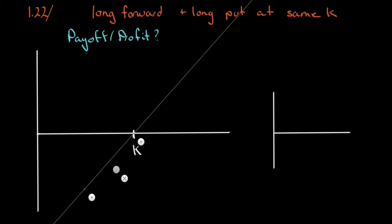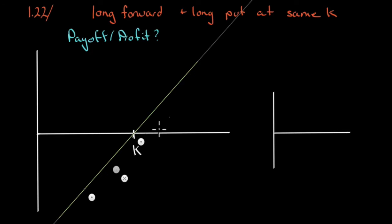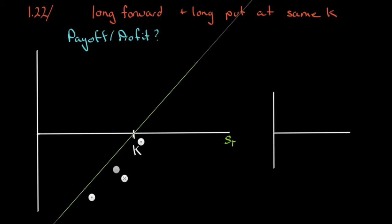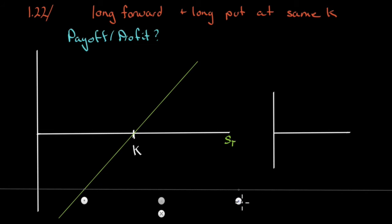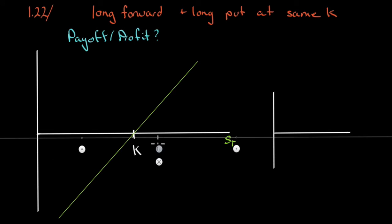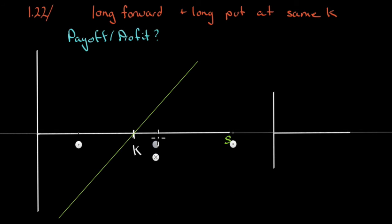Let's put the long forward in. You recall the long forward is just a linear relationship with the price of the underlying. Now let's put the long put in. You'll recall that the long put offers zero payoff if the price ends above the strike price, simply because we would never exercise the option.